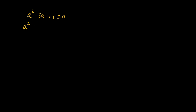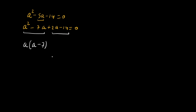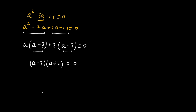Using the middle-term split method: a² - 5a - 14 = a² - 7a + 2a - 14 = 0. Taking common factors: a(a - 7) + 2(a - 7) = 0, which gives (a - 7)(a + 2) = 0.